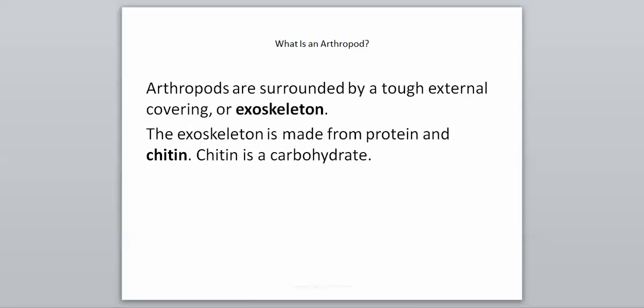Arthropods are surrounded by a tough external covering known as an exoskeleton — a skeleton that is outside of their body. The exoskeleton is made from protein and the carbohydrate known as chitin. If you remember, chitin was also found in the cell walls of fungi, so this kind of brings everything full circle and shows how everything is related. Exoskeleton is an important term you'll need to know.